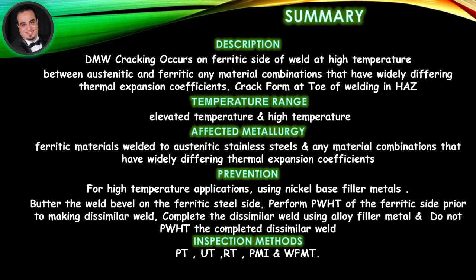Summary description: dissimilar metal weld cracking occurs on the ferritic side of the weld at high temperature between austenitic and ferritic materials, and in any material combinations that have widely differing thermal expansion coefficients. Cracks form at the toe of the weld in the heat-affected zone.